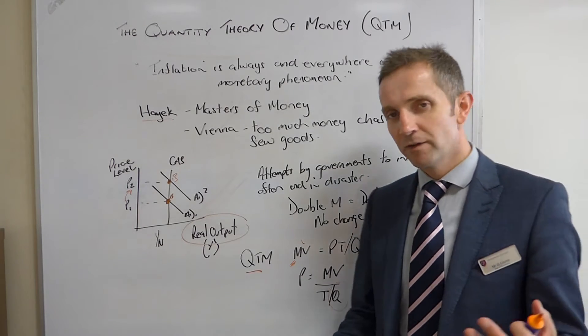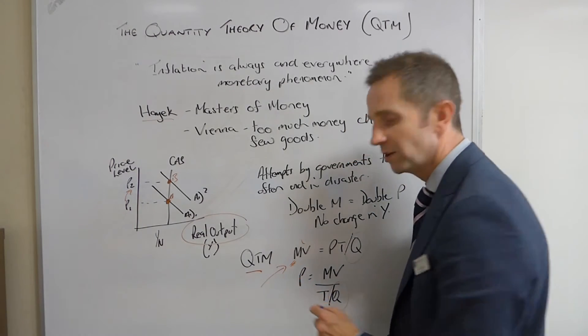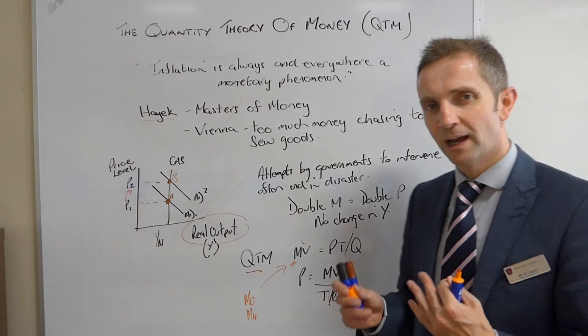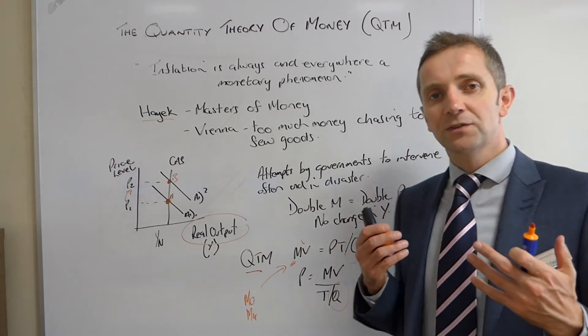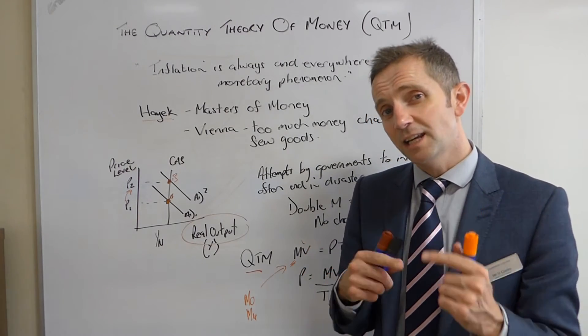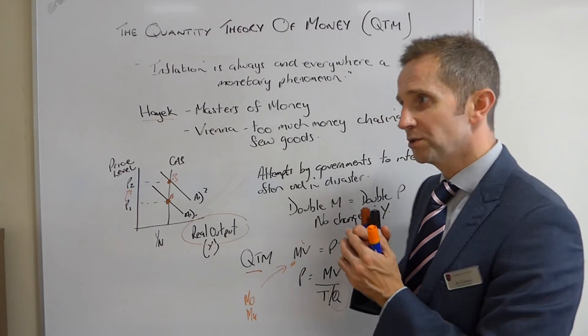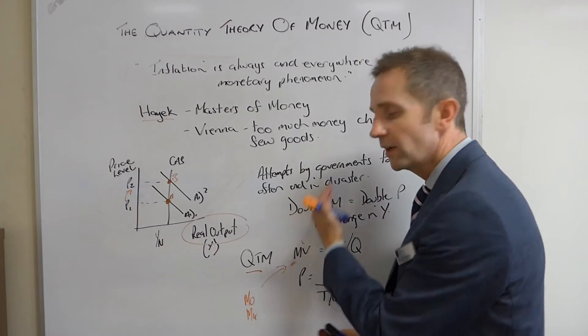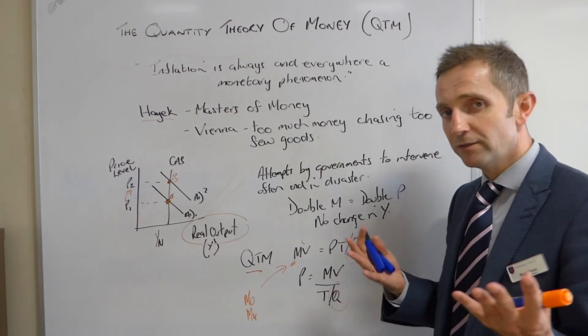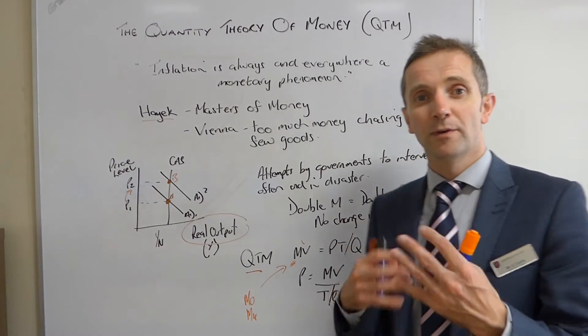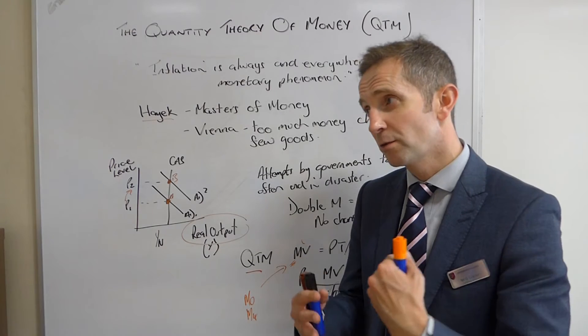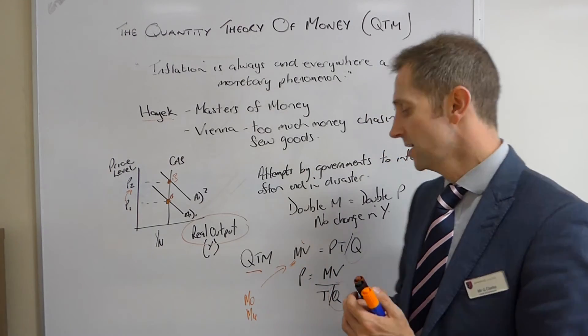So what do we mean by these things? M, the money supply, is fairly obvious. It ranges from M0 to M4, so we're talking about narrow money and broad money, but we'll look at that in another video. V, the velocity of circulation, is the number of times that money is changing hands, and therefore it is indicative of the actual number of transactions taking place in an economy. In a boom time, we would expect V to rise, and in a recession, we would expect V to fall. P is obviously the price level, fairly obvious, and Q is the number of transactions. And again, this is linked into V because the faster V is taking place, the more transactions you will have taking place in the economy.